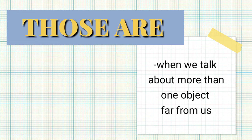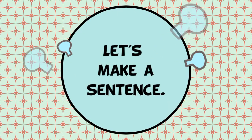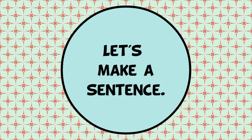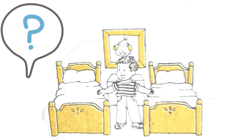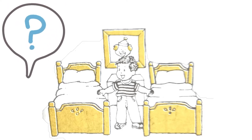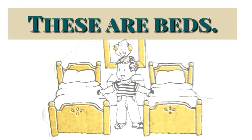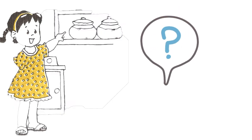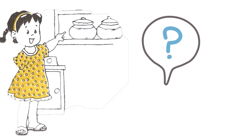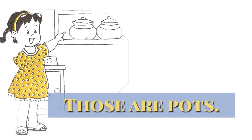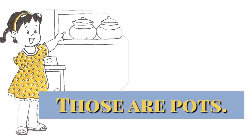Now, let's try to make a sentence. What shall Miguel say? These are beds. What will Maria say? Those are pots. Correct. Now you know the use of 'These are' and 'Those are'.